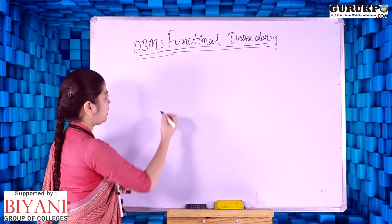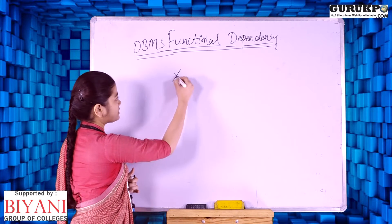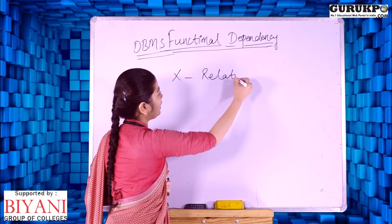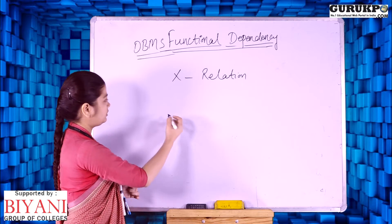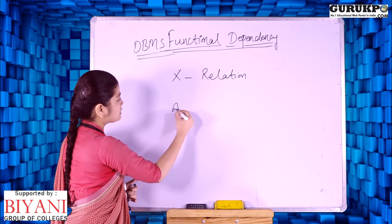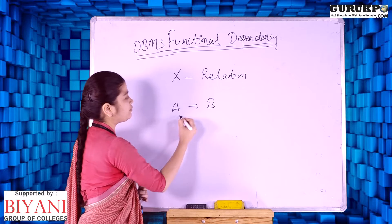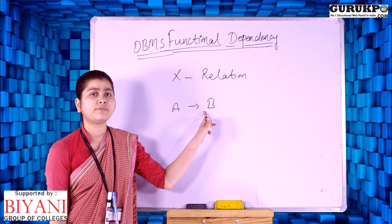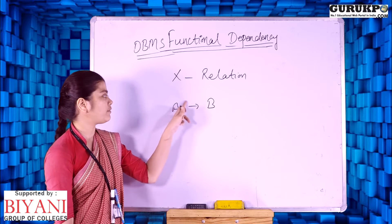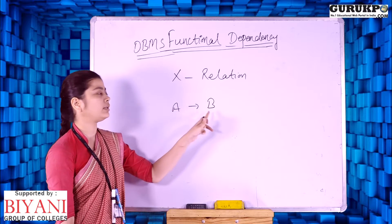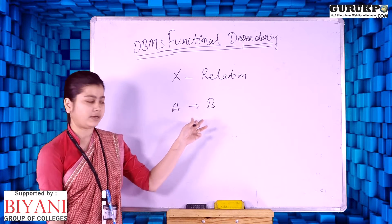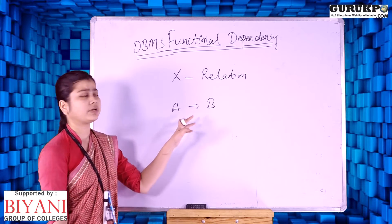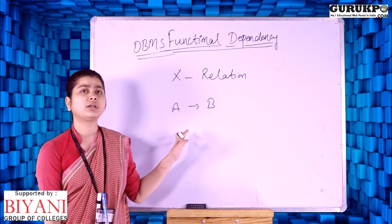Let's say we have a relation x in which b is functionally dependent on a. We can write this as b is functionally dependent on a. Here b is the variable which depends, and a is the variable on which the value of b depends. So here we can say b is functionally dependent on a.